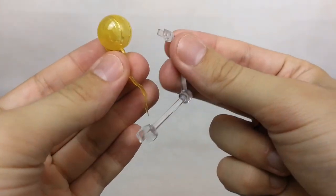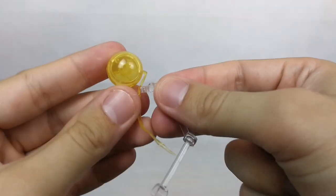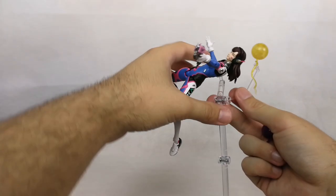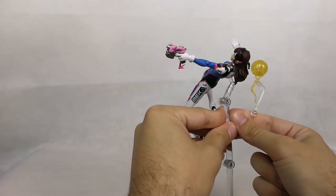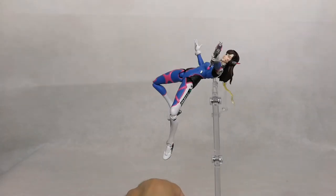I do like the detail. It comes with this arm that you connect the effect part there, and then you connect this to another Figma stand for another Figma figure. Like for example, my Figma D.Va. Link to review in the cards above or in the description below.